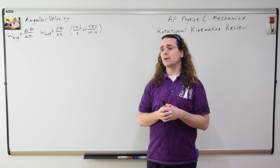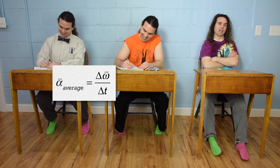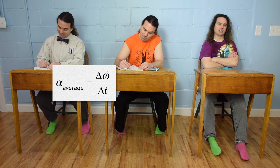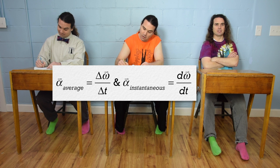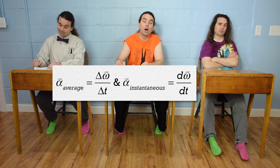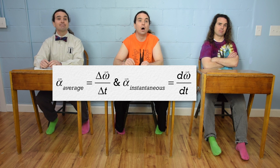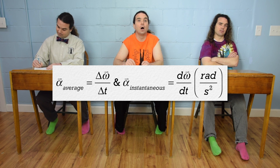Bo, what about angular acceleration? The symbol for angular acceleration is alpha — some of us call alpha a fishy thing. Average angular acceleration is change in angular velocity over change in time. Instantaneous angular acceleration is the derivative of angular velocity with respect to time. And the units for angular acceleration are radians per second squared.